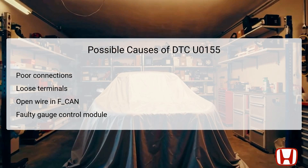Several factors can lead to DTC U0155. Poor connections at the gauge control module or ECM may disrupt the signals required for accurate communication. Additionally, loose terminals can create intermittent failures. An open wire in the F-CAN system can also prevent proper signaling between the ECM and the gauge control module, originating from physical damage, wear and tear, or faults in the wiring harness. Lastly, a faulty gauge control module itself could be the root cause, necessitating substitution to rule out this possibility. Each of these causes should be thoroughly investigated during troubleshooting.